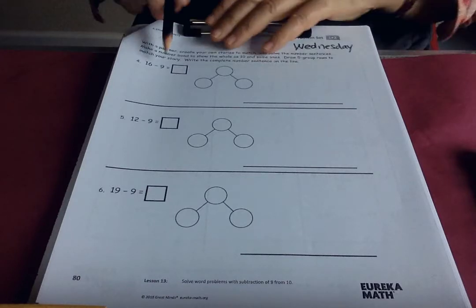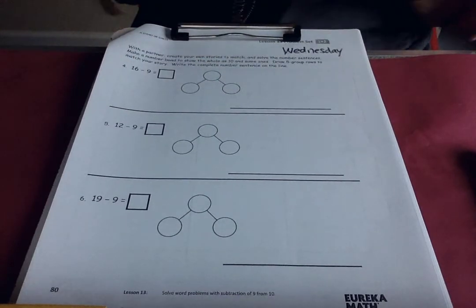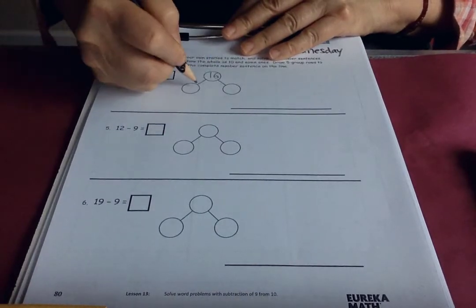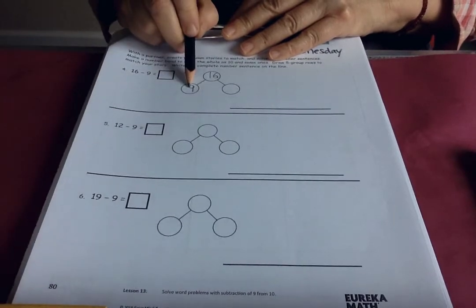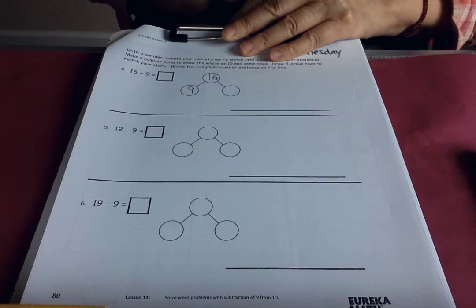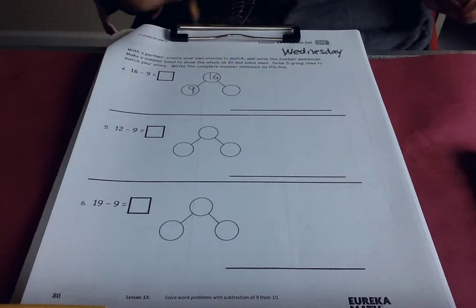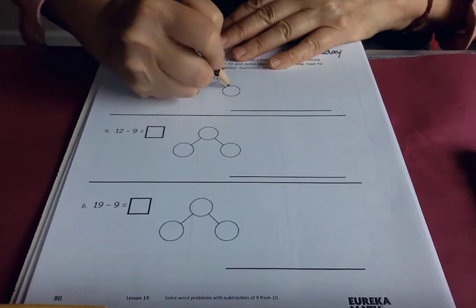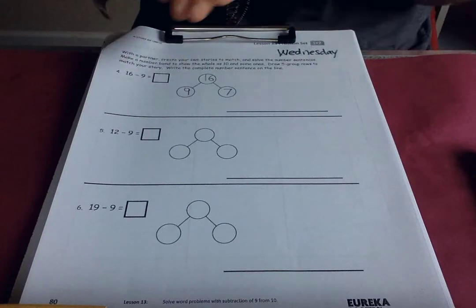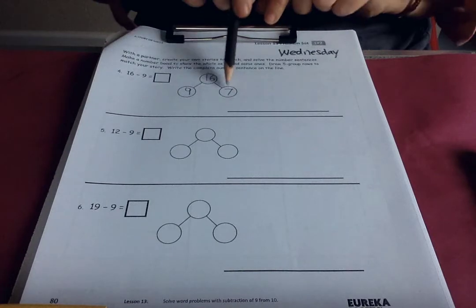So let's see how this goes. Here we have sixteen take away nine and we're trying to think what is that. So if I put sixteen up here and we're finding the other partner, well ten and six make sixteen. Do you remember what we did to find out the partner for nine? We move one over and so nine and seven make sixteen. So if I was to take away nine, it would leave seven. It's just one more.